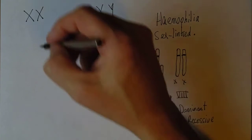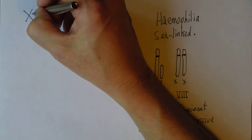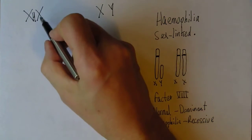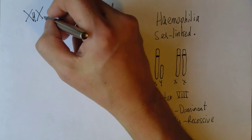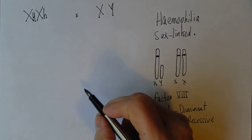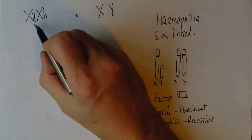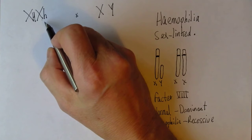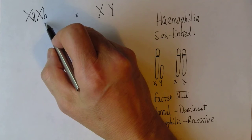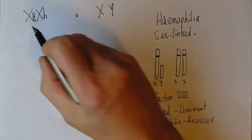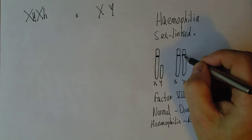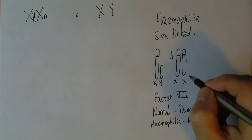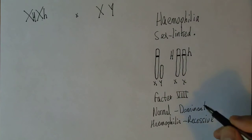This tends to arise when we have a female whose one X chromosome carries the normal dominant gene — we'll give that a capital H — but whose other X chromosome carries the recessive haemophilia gene. So this woman is X(H) X(h), heterozygous for the haemophilia gene. She'll be phenotypically normal because she has one copy of the normal dominant gene.